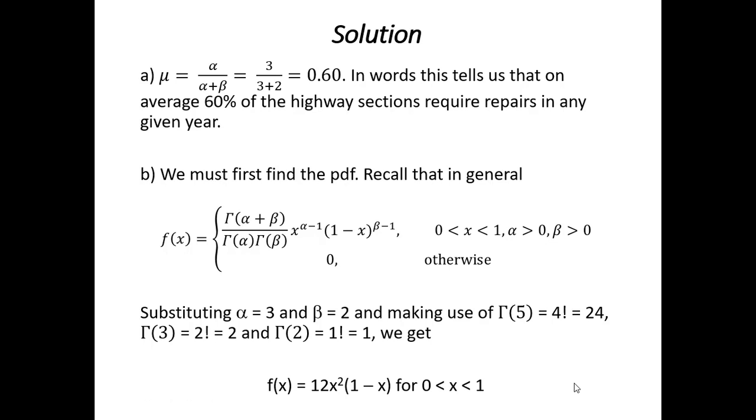All right, so, part A is asking us for an average, which would be e of x or mu. We have this formula, alpha over alpha plus beta. We know alpha is 3, beta is 2. So, substituting in, you can see we get 3 fifths or 0.60. So, in words, we could say that on average, 60% of the highway sections require repairs in any given year.